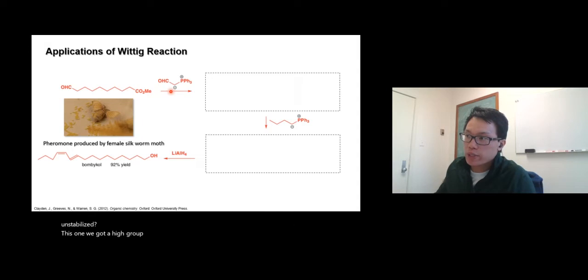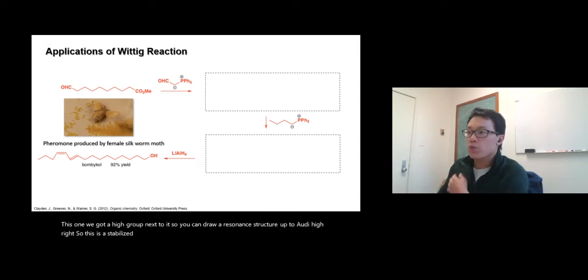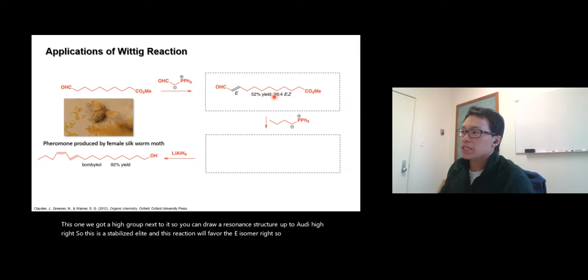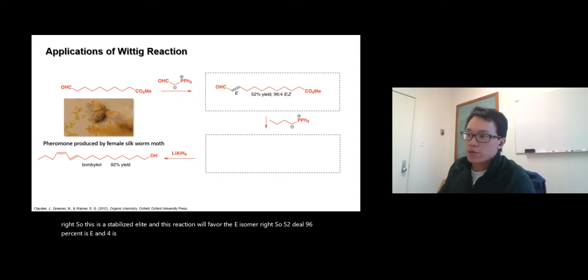First off, what type of ylide is it, stabilized or unstabilized? This one we got an aldehyde group next to it, so you can draw a resonance structure up to the aldehyde. So this is a stabilized ylide, and this reaction will favor the E isomer. 52% yield, 96% is E and 4% is Z. Basically we try to form this bond right here, the E isomers right here, and we get it.